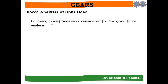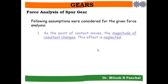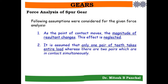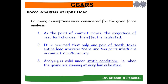The force analysis of spur gear is based on three assumptions. First, as the point of contact moves, the magnitude of the resultant force changes, but this effect is neglected — a constant resultant force is assumed. Second, it is assumed that only one pair of teeth takes the entire load, whereas in reality two pairs may be in contact simultaneously. Third, the analysis is valid under static conditions only, meaning dynamic loading on the gear tooth is not considered.